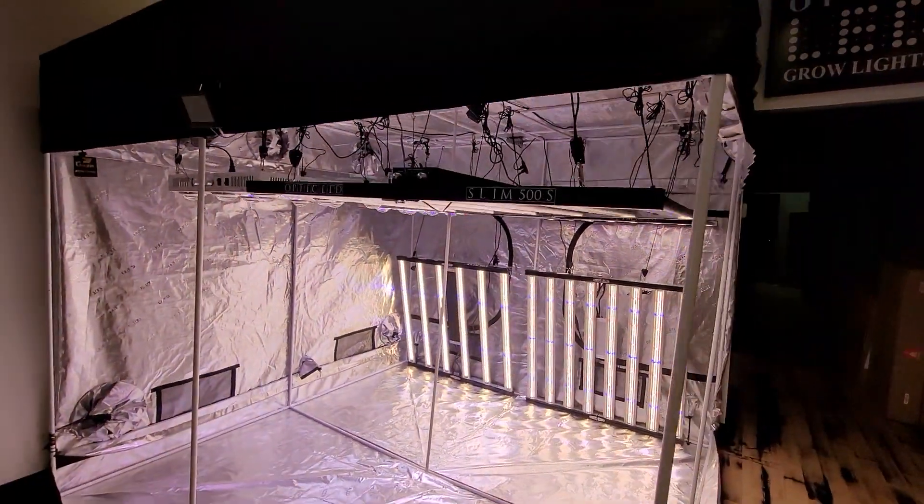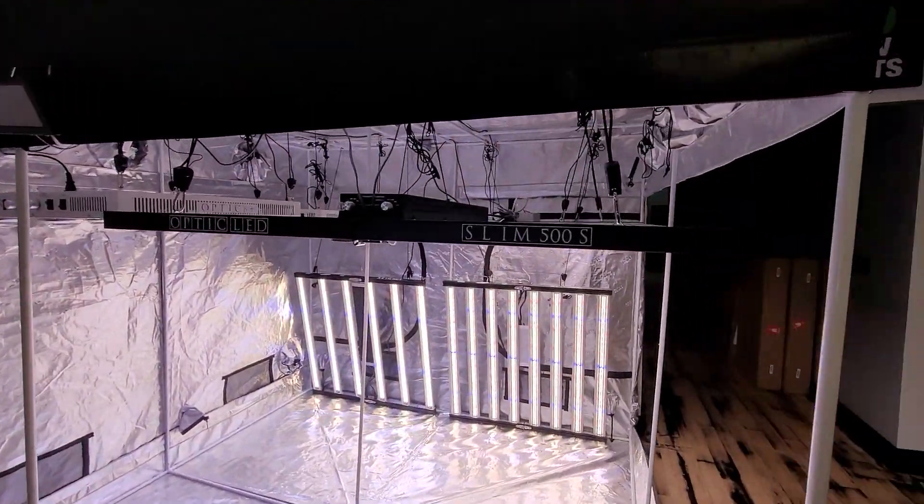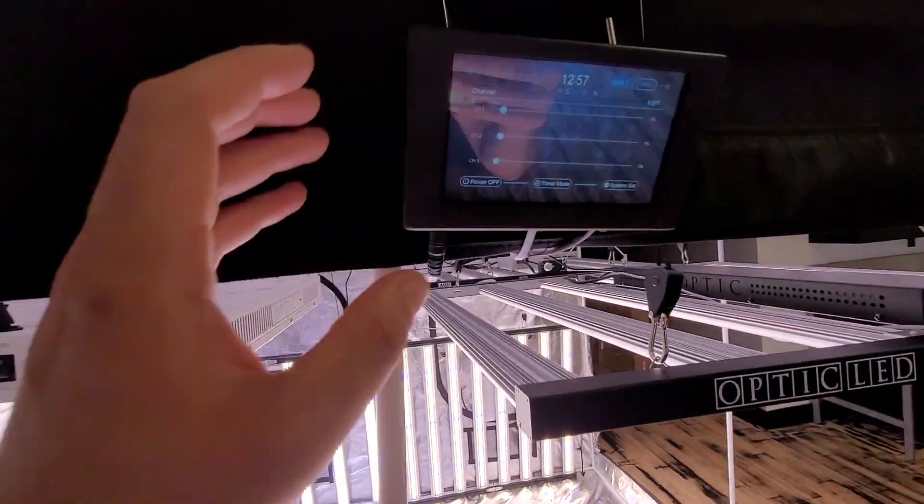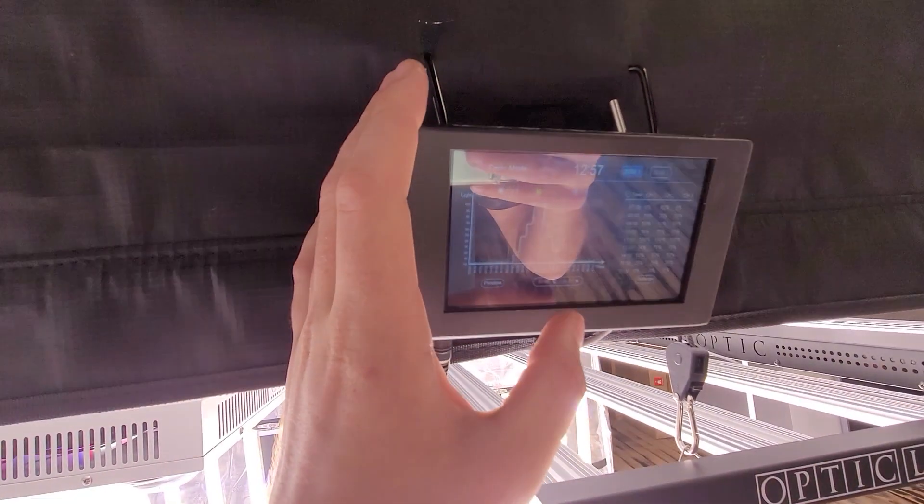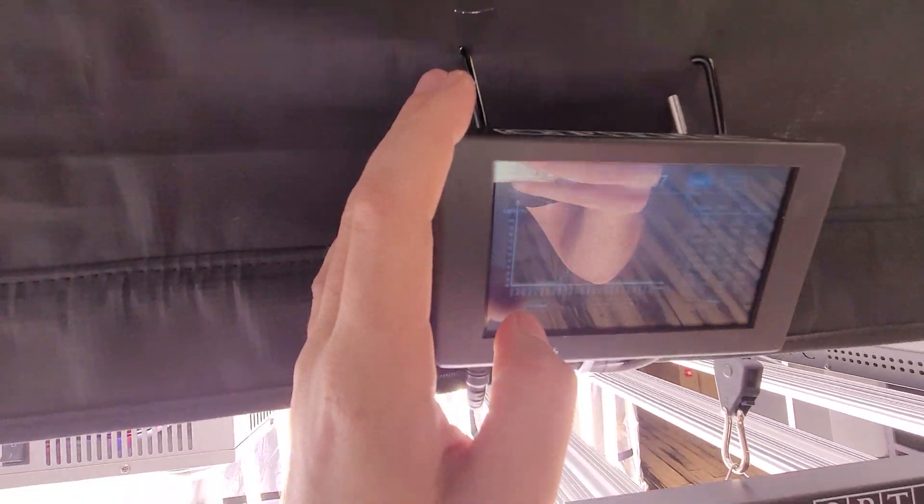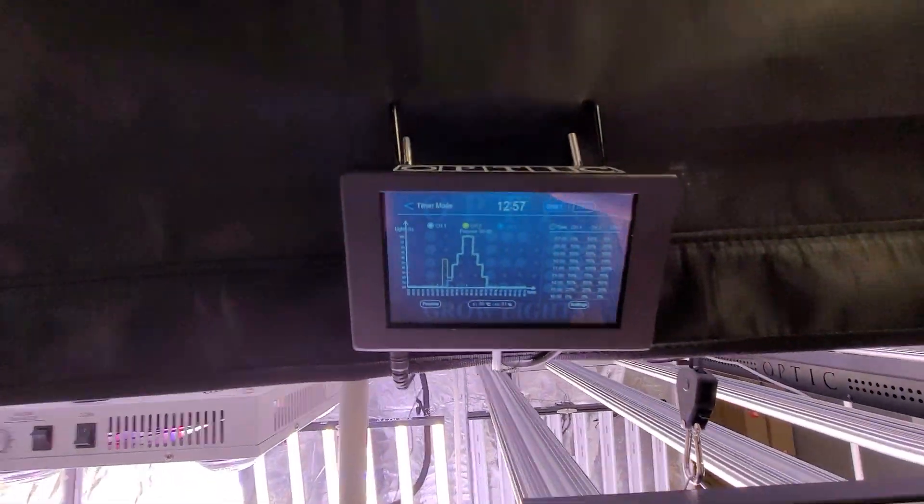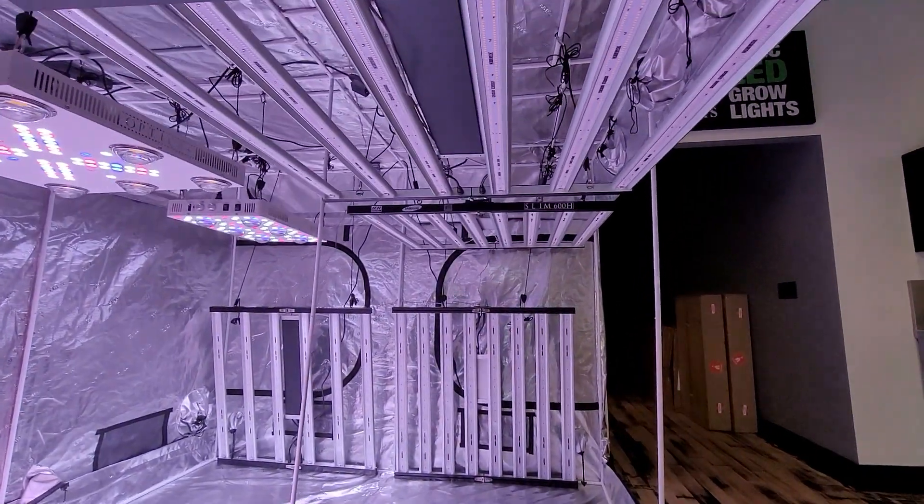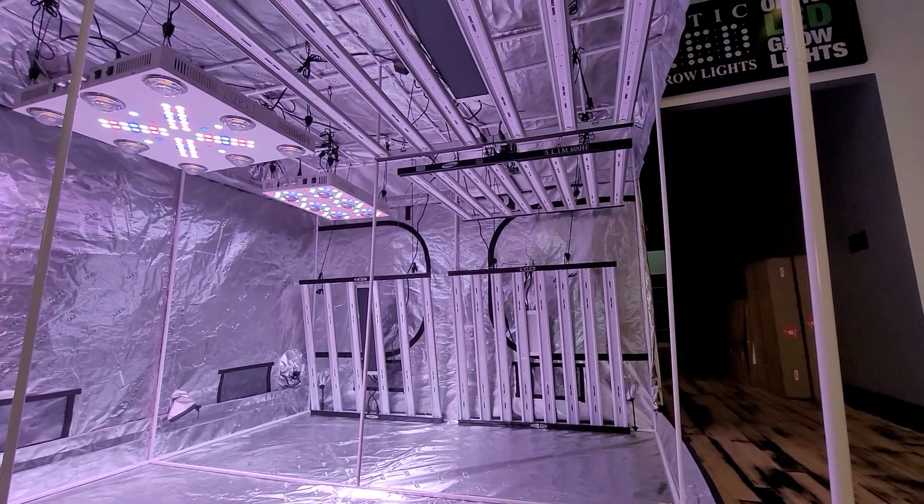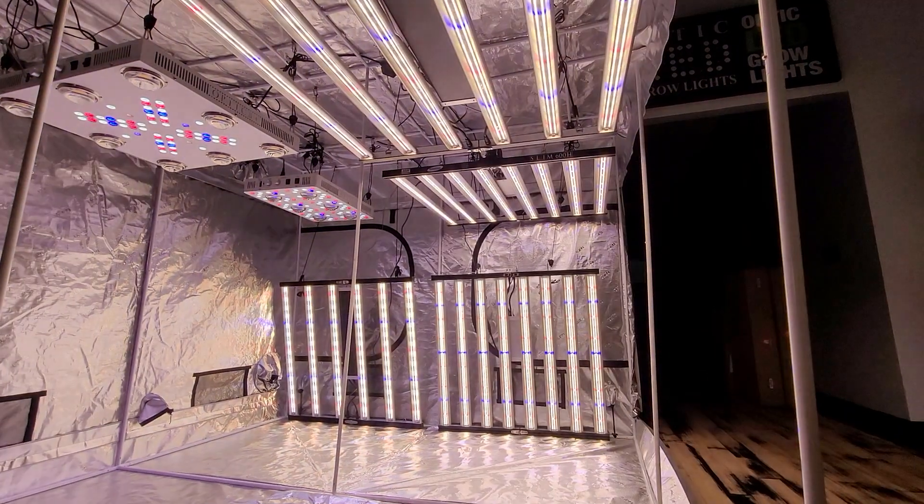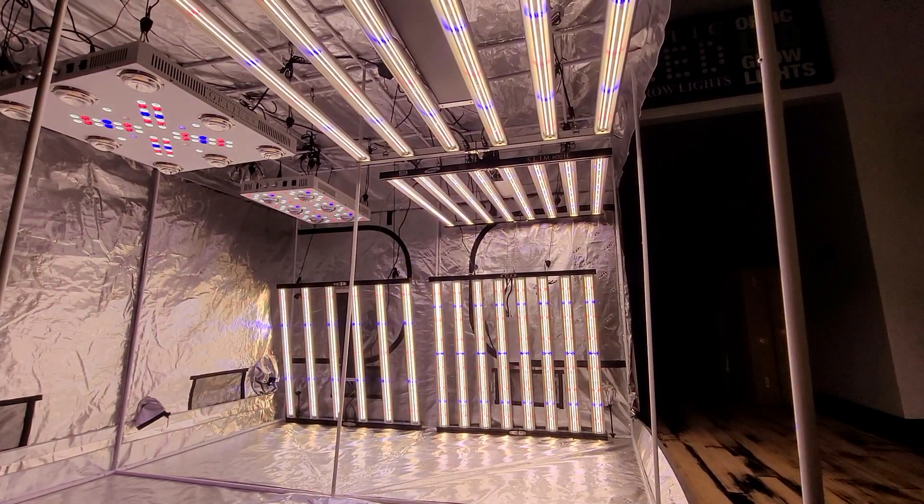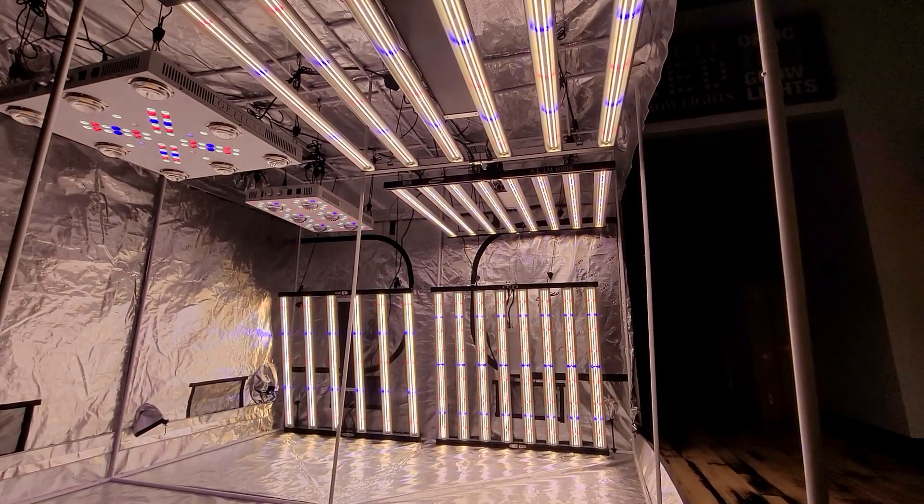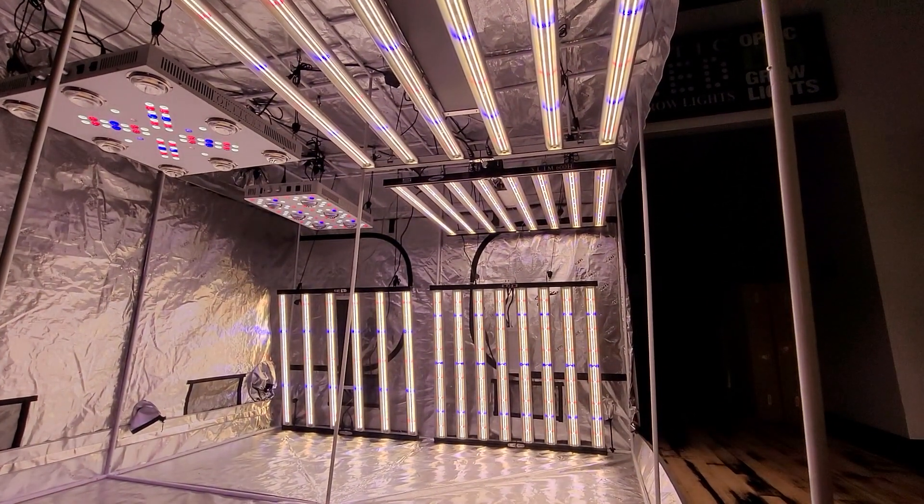We're going to run through a sunrise sunset cycle for you guys. This is only the Slim series connected to the master controller. So if we come over here, we hit timer mode and we hit premium preview. You can see all these Slims are going to come on in auto sunrise at the same time, build itself up, and then work its way all the way back down to shut off.